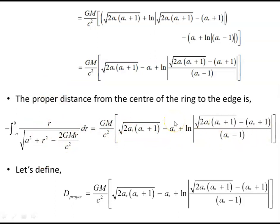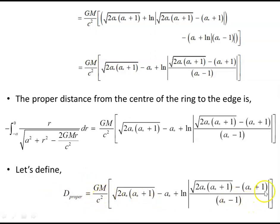So the proper distance from the center of the ring to the edge — which we'll call d_proper — is GM/c² times that expression in a*. We've now given the proper distance in terms of the mass of the black hole and its dimensionless spin parameter.